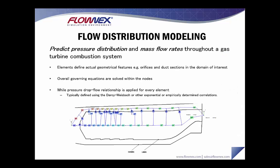Flow distribution modeling allows you to predict the distribution and mass flow rates through the gas turbine combustion system. Typically, elements define actual geometrical features such as orifices and duct sections in the domain of interest. The overall governing equations are solved within nodes, and a pressure drop–flow relationship is applied for every element, typically defined using the Darcy-Weisbach, exponential, or empirically determined pressure loss correlations.